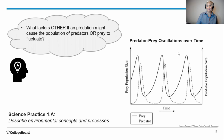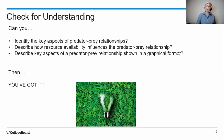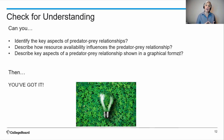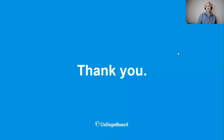Let's check for understanding. From this video, can you identify the key aspects of predator-prey relationships? Can you describe how resource availability — the prey — influences the predator-prey relationship? And can you describe key aspects of the predator-prey relationship if shown in a graphical format? If you can, then you got it. Congratulations. Thanks for watching, and I'll see you in the next video.